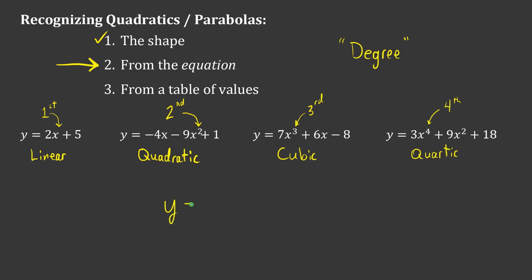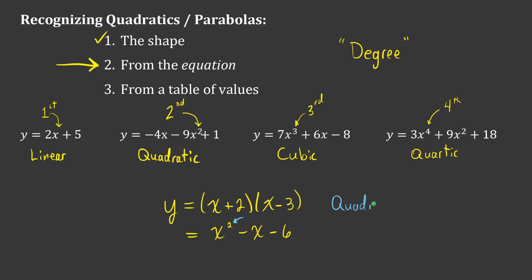Sometimes the degree is hiding. If I had an equation like (x + 2)(x − 3), this looks like a first-degree equation, but by the time you expand and multiply it all out, you end up with a second-degree equation. So this is actually quadratic. The first line is the factored version, and the second line is the expanded version — we're going to be talking in future videos about factored form and why it's so crucial with quadratics.